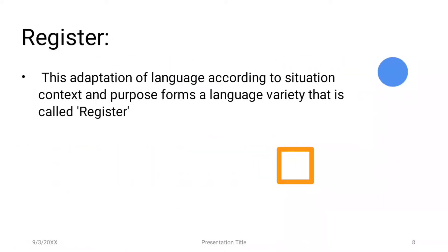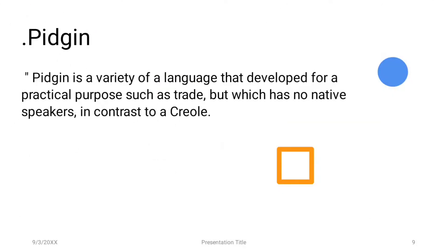Then number four: register. Human beings are not static — their thinking, choices, and behaviour vary according to their needs and situations. As they adapt their behaviour according to situation, they also adapt their language. This adaptation of language according to situation, context, and purpose forms a language variety called register. The three attributes of register are: situation, context, and purpose.